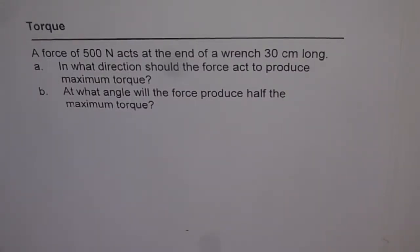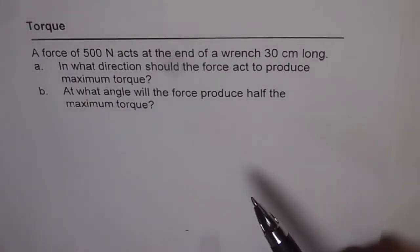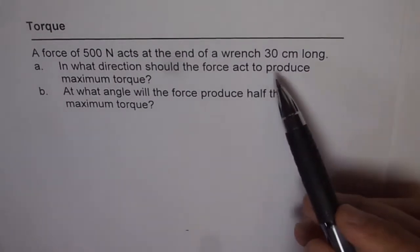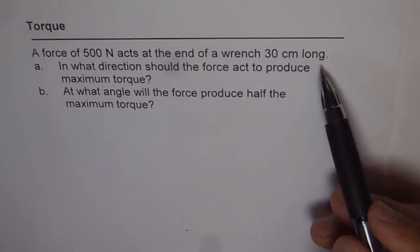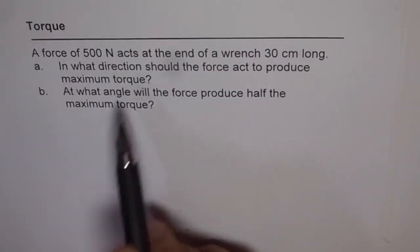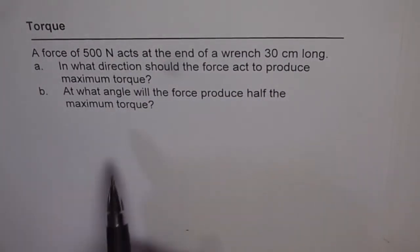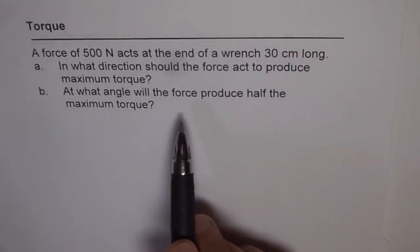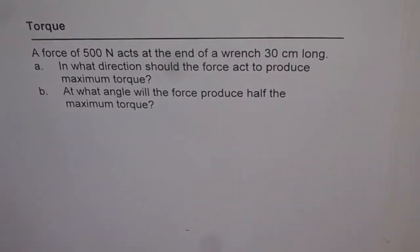Let's understand what is torque with the help of this example. A force of 500 newtons acts at the end of a wrench 30 centimeter long. In what direction should the force act to produce maximum torque? And part b is, at what angle will the force produce half the maximum torque?